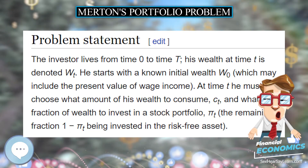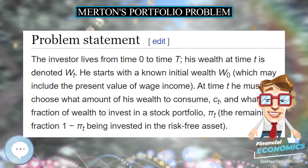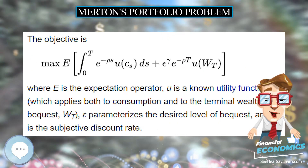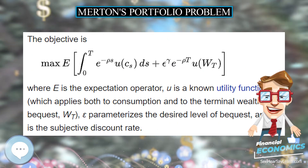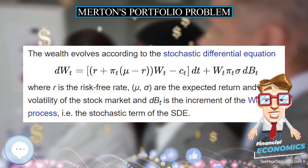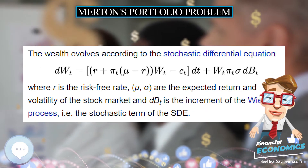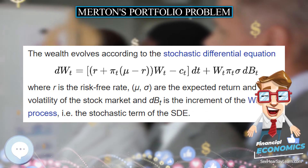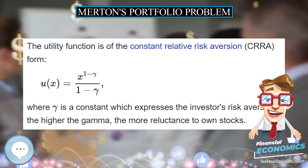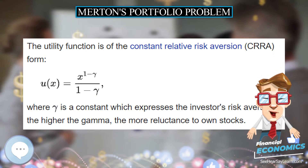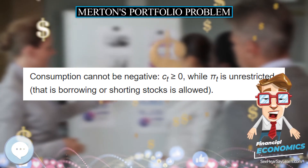The wealth evolves according to the stochastic differential equation, where r is the risk-free rate, mu and sigma are the expected return and volatility of the stock market, and dB(t) is the increment of the Wiener process, i.e. the stochastic term of the SDE. The utility function is of the constant relative risk-aversion (CRRA) form.